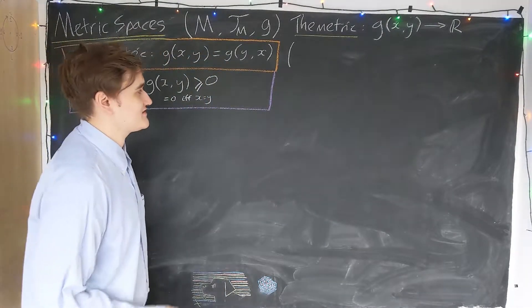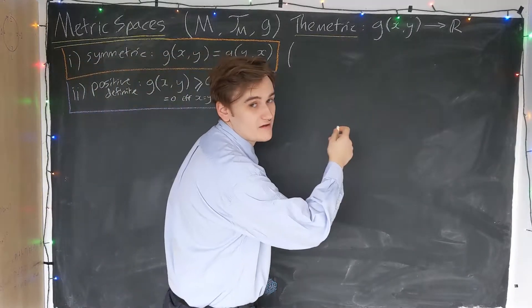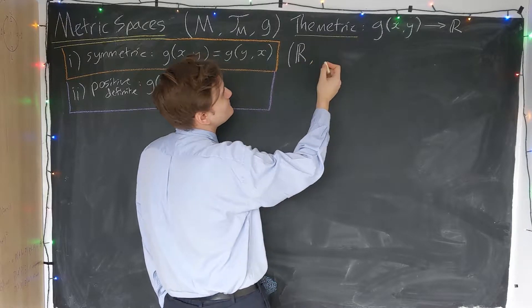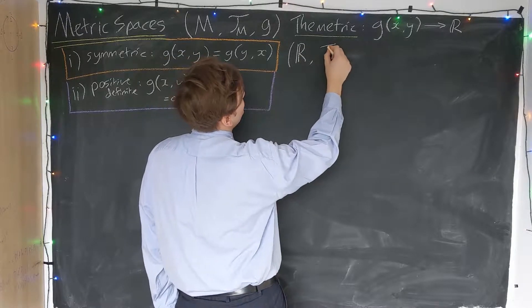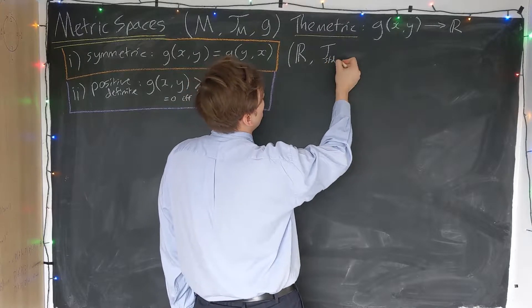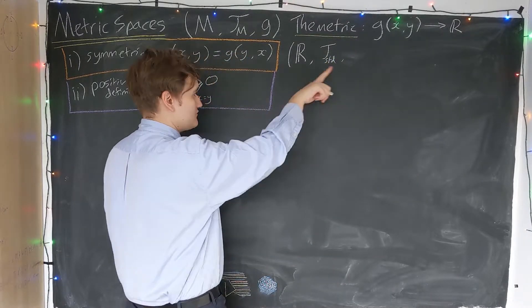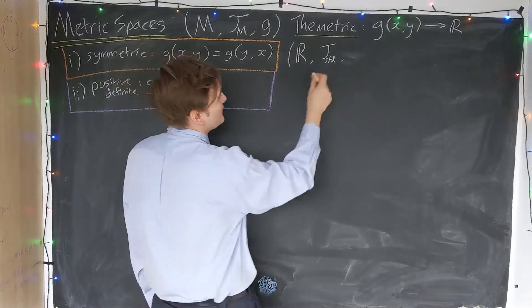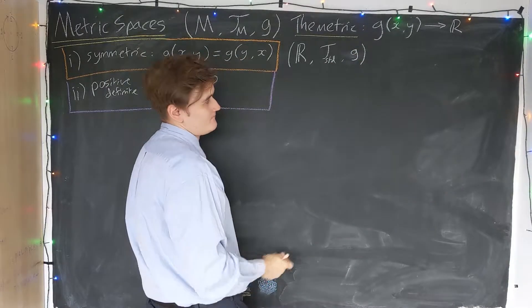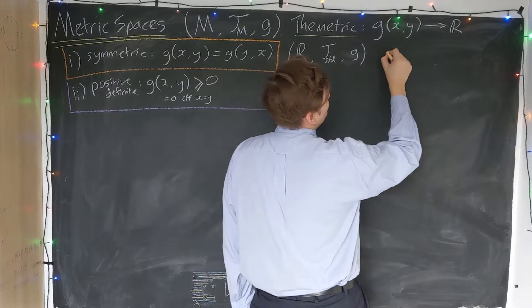The easiest example we can consider would be to just take our topological space to be the real numbers with the standard topology, which I mentioned in the last video. We'll actually come back to that in this video, but for now it's just going to be implicit. And we've defined some metric on this space.